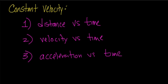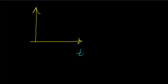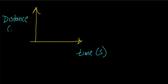So let's clear some room to start looking at our first graph. I'm going to look at the distance versus time graph. On the x-axis I'm going to have my time component, and I'll measure it in units of seconds. On the y-axis I'll have distance, and I'll measure that in units of meters. So what this is going to tell me is where this object is at a particular moment in time.